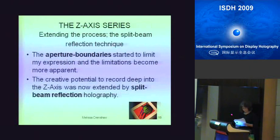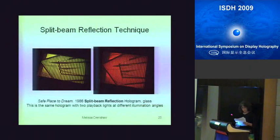The Z-axis series, in the early 1980s. Extending the process with the split-beam reflection technique — the aperture boundaries started to limit my expression. The shadowing created by the 45-degree angled reference object beam prevented me from exploring deep into the Z-axis; the deeper the scene became, the more limited the illumination arena. The creative potential to record deep into the Z-axis was extended by incorporating additional object illumination beams during recording to illuminate layers of non-objective scenes behind the film plane. The Dinosuk technique combined with additional object beams allowed for more depth without compromising the immediacy of the process. A series of pseudocolor reflection holograms titled Z-axis was the result.